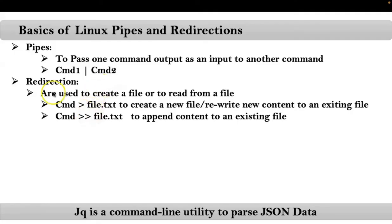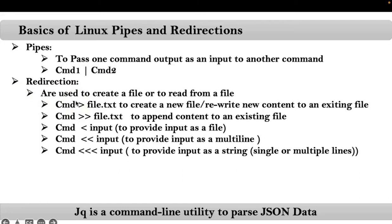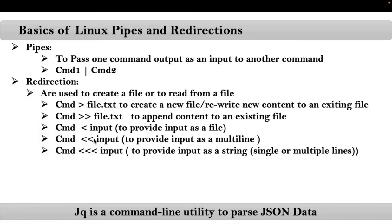That is the usage of the greater-than redirection symbols. For less-than redirection symbols we have three syntaxes: single less-than, double less-than, and triple less-than. Single less-than is used to provide a file as input for a command. Double less-than is used to provide data directly — not a file — and that is typically multiple lines, which is why we normally use it for multiple lines. Triple less-than is used to provide data as a string for your command; it could be single or multiple lines.